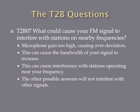What could cause your FM signal to interfere with stations on nearby frequencies? The answer is your microphone gain could be too high, causing over-deviation. If your microphone gain isn't set correctly, it can cause your signal to get basically big and sloppy, bleeding over into the surrounding frequencies wider than it usually would, and interfering with amateurs operating in those frequencies. The other possible answers don't cause that kind of interference.